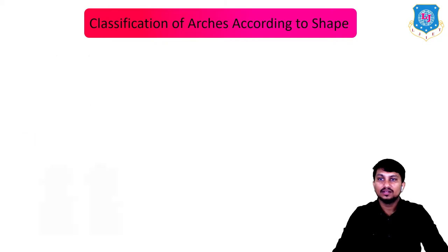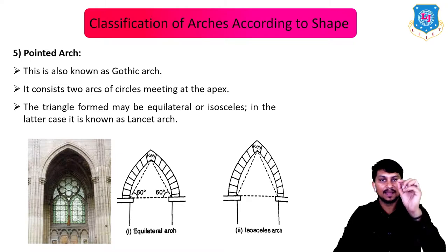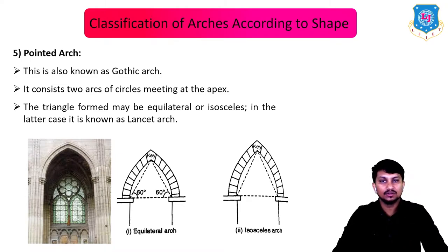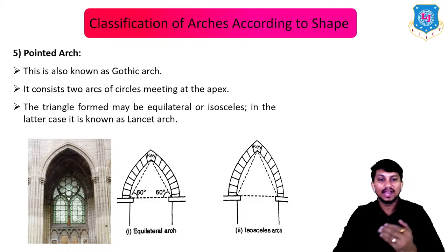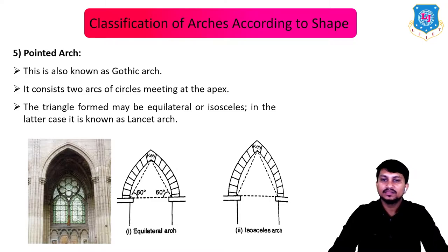Next is the pointed arch, also known as gothic arch. It consists of two arcs of circles meeting at the apex point. The triangle formed may be equilateral or isosceles — in the latter case it is also known as a lancet arch.